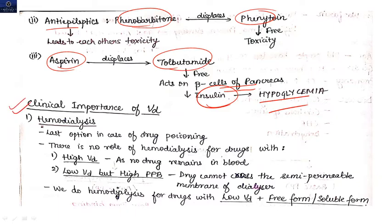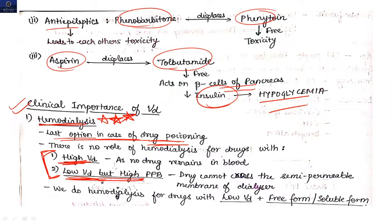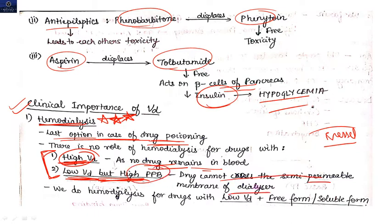Now, the clinical importance of volume of distribution. Hemodialysis is the last option in cases of drug poisoning. There are two conditions where hemodialysis has no role: first, if a drug has high volume of distribution — because very little drug remains inside blood vessels, so dialysis removes very little; second, if a drug has low VD but high plasma protein binding — because the drug-protein complex is too large to cross the semipermeable membrane of the dialyser. So both high VD and high plasma protein binding make hemodialysis ineffective.